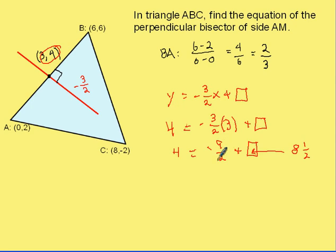And of course, you could solve that algebraically as well. I like to think it out so people can kind of understand more what I'm saying. So now I know the slope is negative 3 over 2, and I know that the y-intercept is 8 and a half.